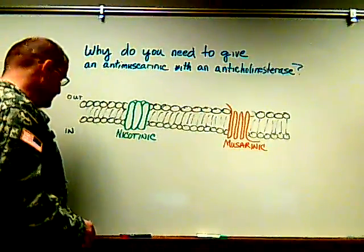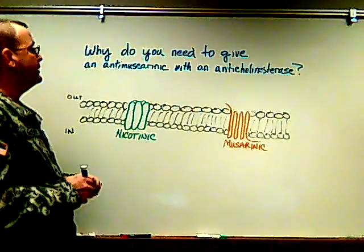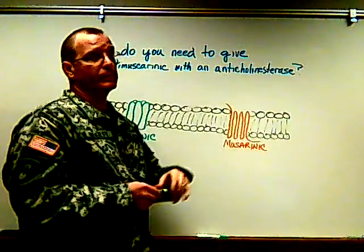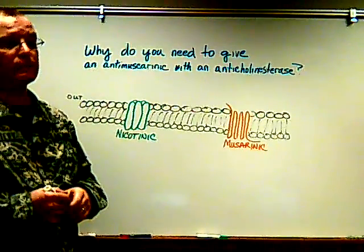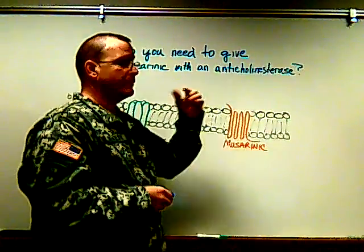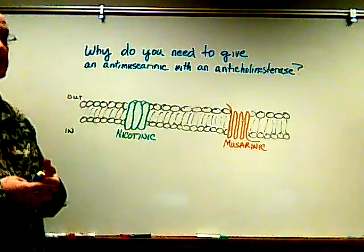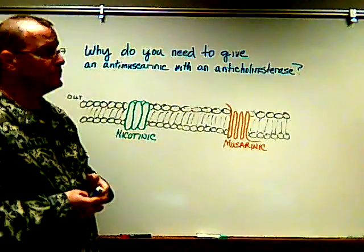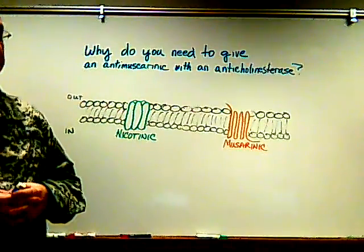The question is: why do you need to give an anti-muscarinic when you give an anti-cholinesterase, especially when you're reversing a neuromuscular blocker? We give the anti-cholinesterase to bind the cholinesterase and allow more acetylcholine to build up in the synapse to displace the non-depolarizer from the nicotinic muscle receptor.